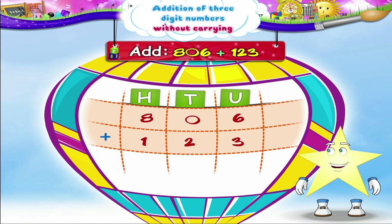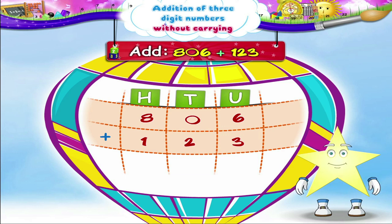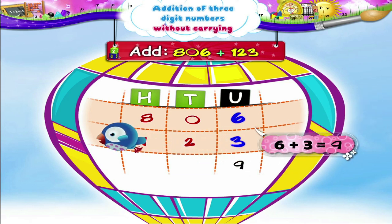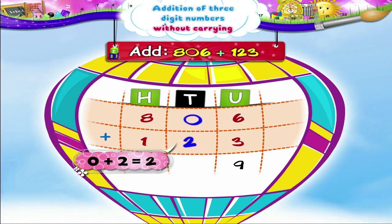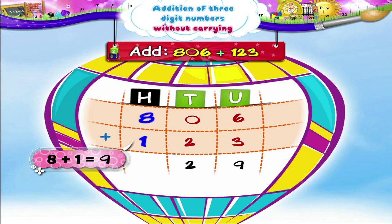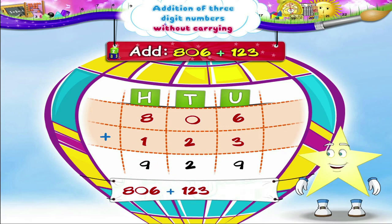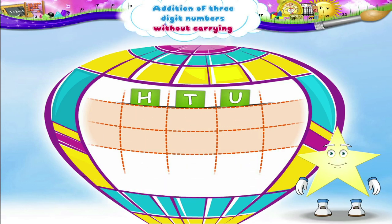In the next example, the numbers have already been arranged in proper columns. Just fill in the empty boxes. In the first example, add 806 and 123. Tell me the answer, Starry! Yes! 6 units plus 3 units equals 9 units. 0 tens plus 2 tens equals 2 tens. And 8 hundreds plus 1 hundred equals 9 hundreds. So, 806 plus 123 equals 929.